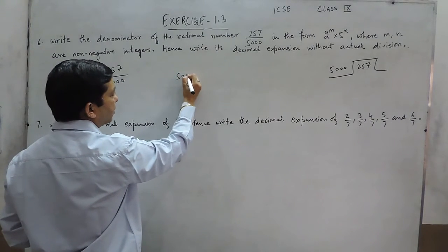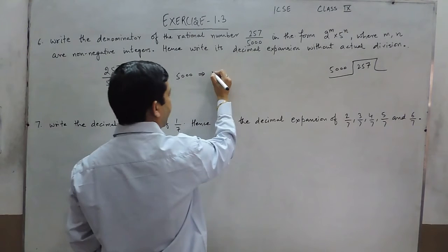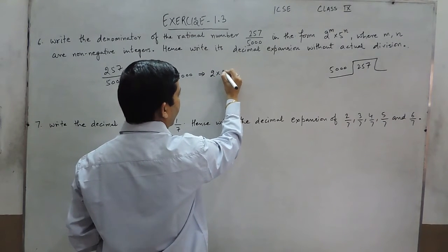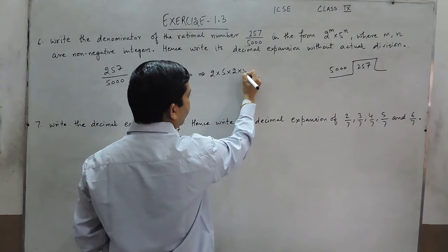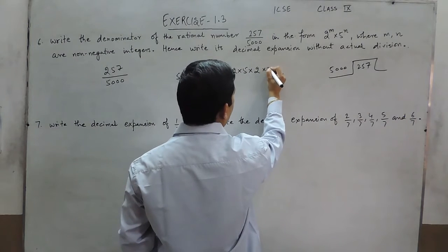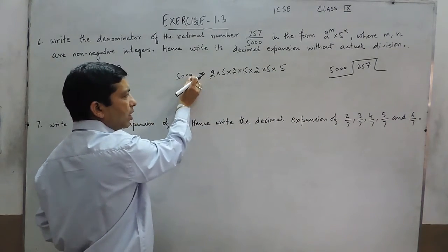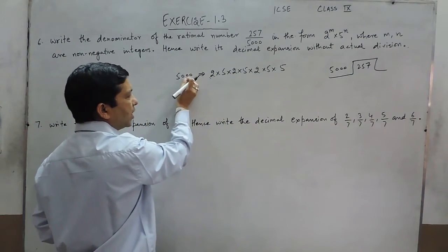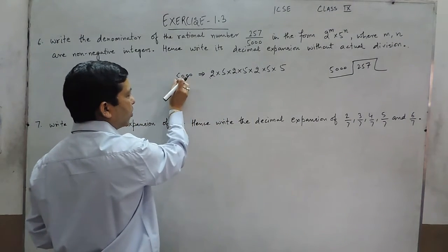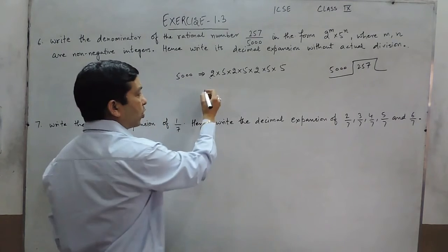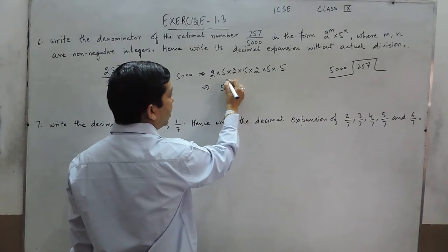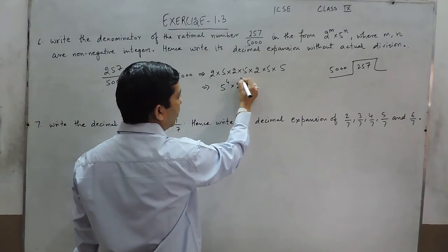Here, if we talk about 5000, I can write this as 2 into 5 into 2 into 5 multiplied by 5. Because 2 into 5 is 10, again 2 into 5 means 10, this 2 into 5 means 10 and this 5 is already there. So this I can write as 5 to the power 4 into 2 to the power 3.